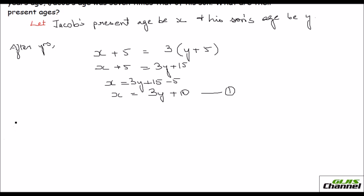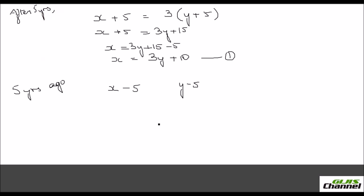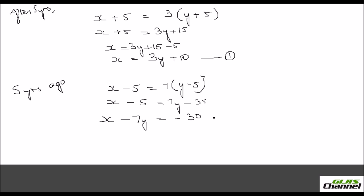For 5 years ago, subtract 5 from both ages. Jacob's age was 7 times son's age: x minus 5 equals 7(y minus 5), which gives x minus 5 equals 7y minus 35. Bringing x and y to one side: x minus 7y equals negative 30. This is the second equation.